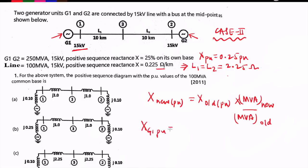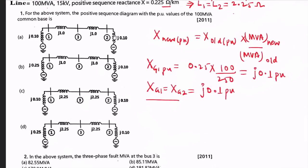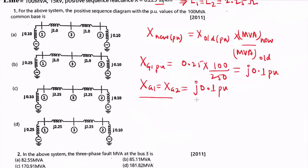So Xg1 (pu) on the new 100 MVA base = 0.25 × (100 / 250) = j0.1 pu. Since G2 has the same rating and same old reactance value, Xg2 = j0.1 pu as well. Looking at the options, only options A and C have generator reactance of 0.1 pu, so options B and D are eliminated.